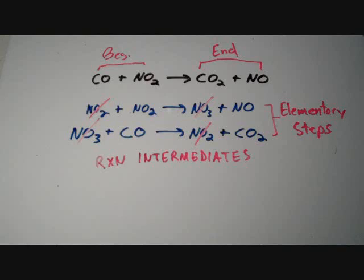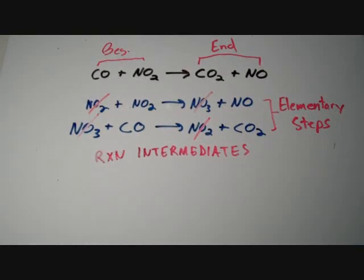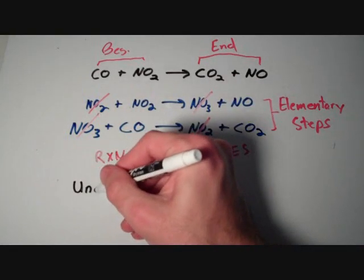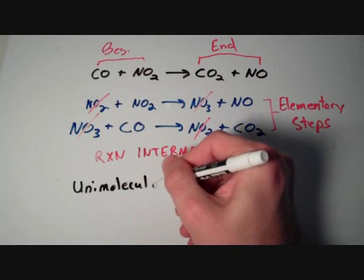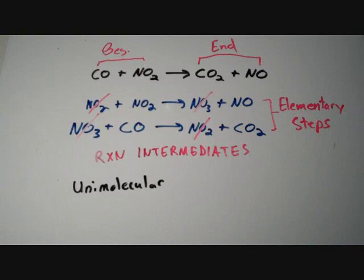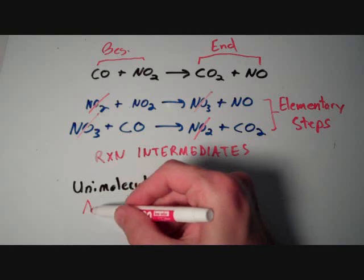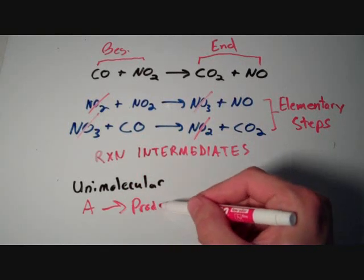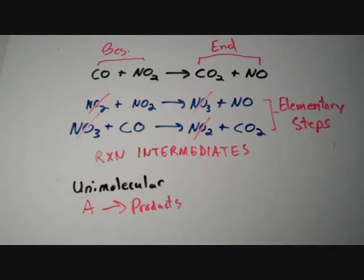Let's get into the properties of elementary steps a bit more. In general, elementary steps are characterized by their molecularity — the number of reactant molecules that collide together in an elementary step. The first and perhaps simplest type is called unimolecular, where we simply have A becoming products, meaning a single A molecule decomposes into something.